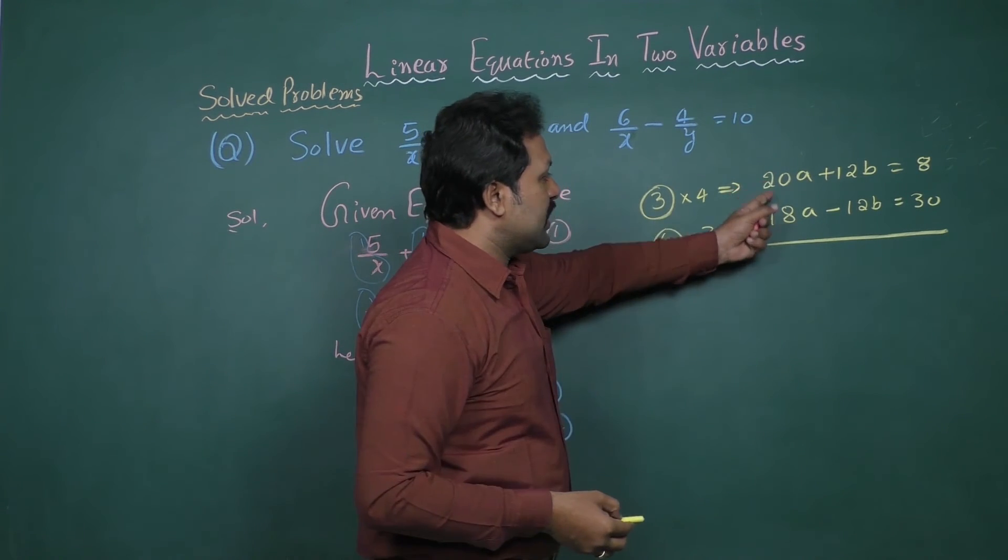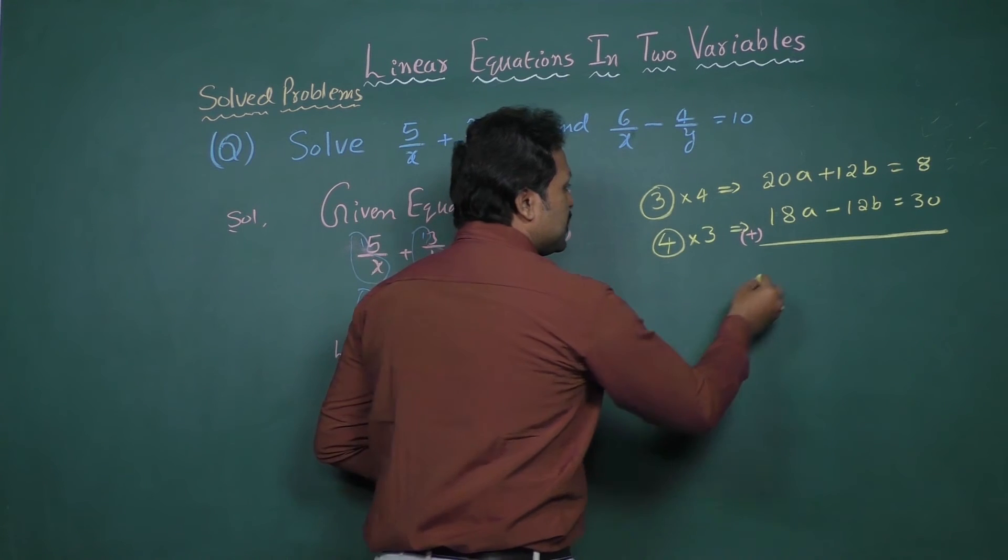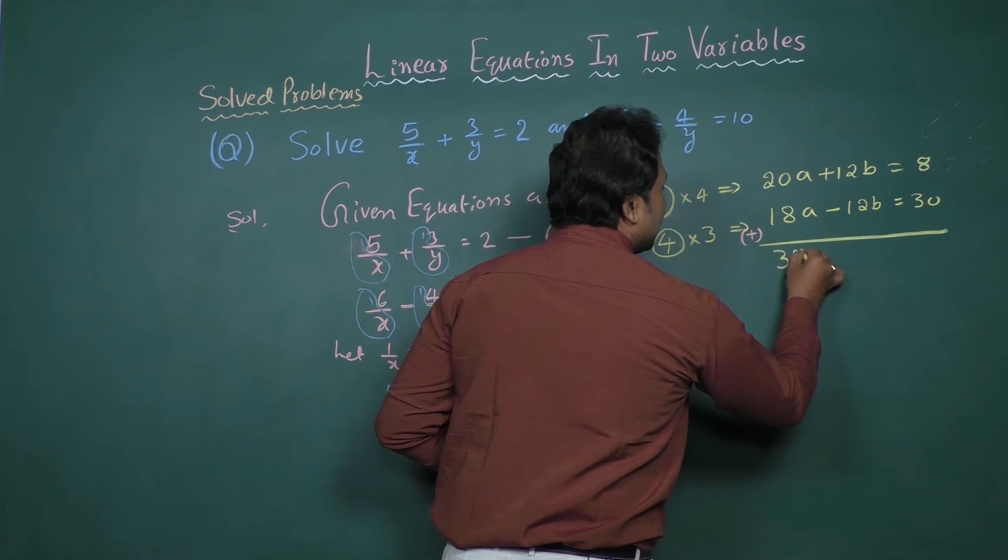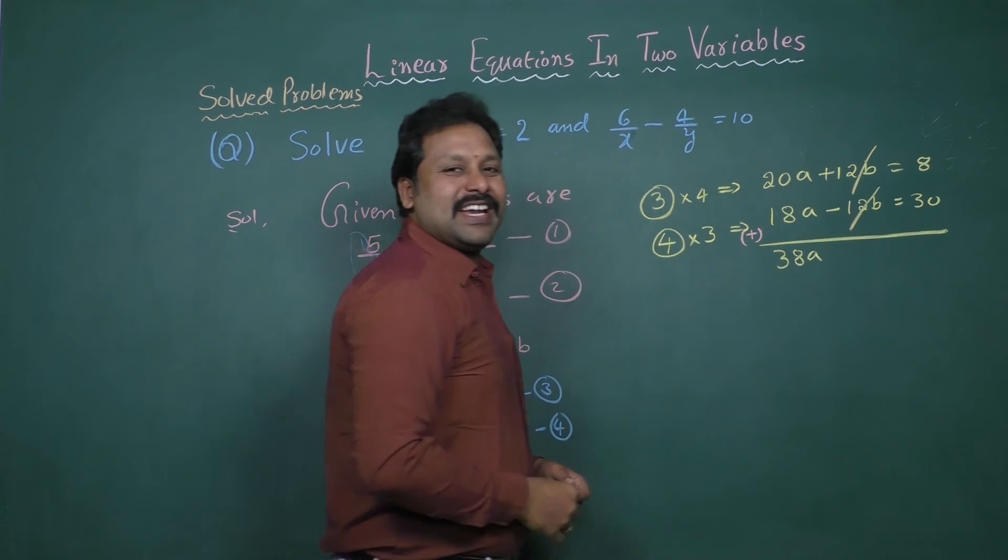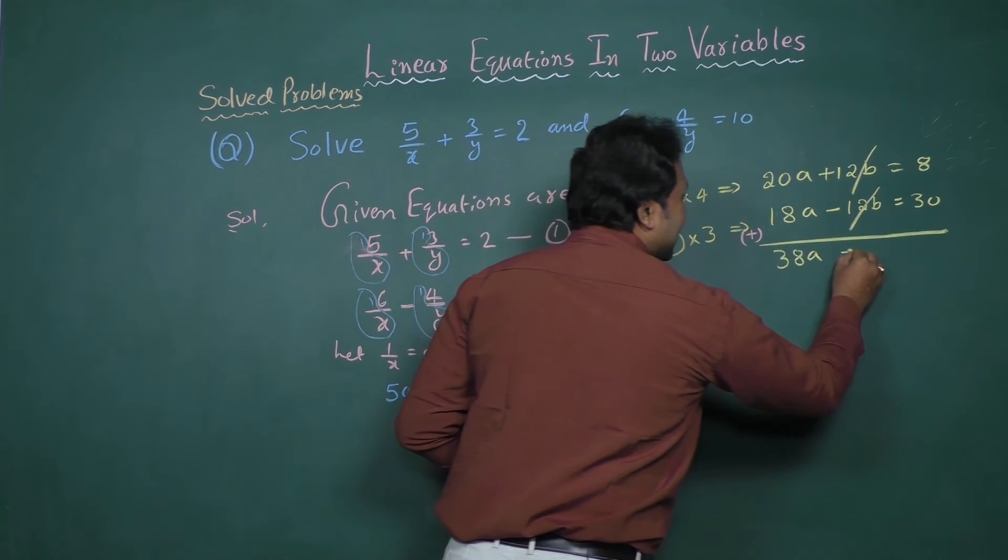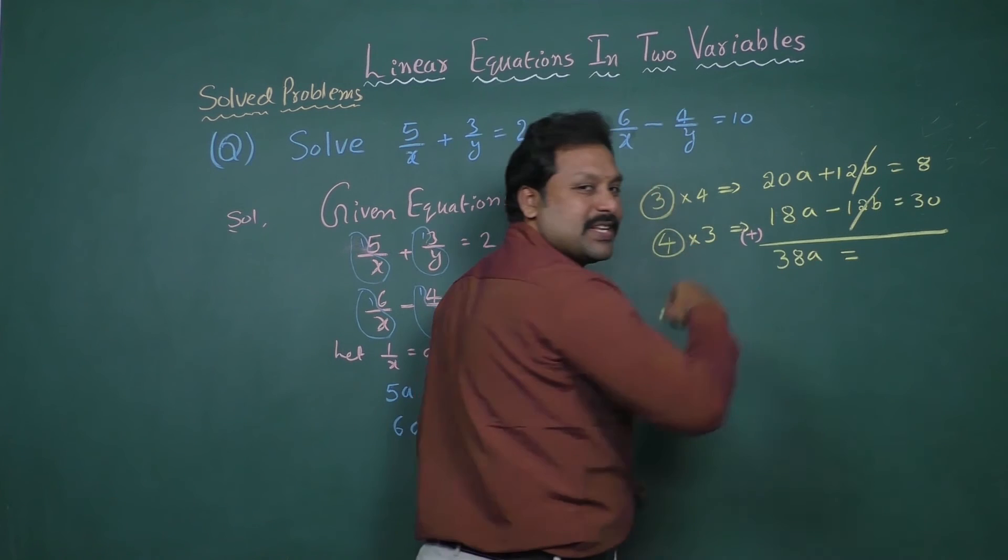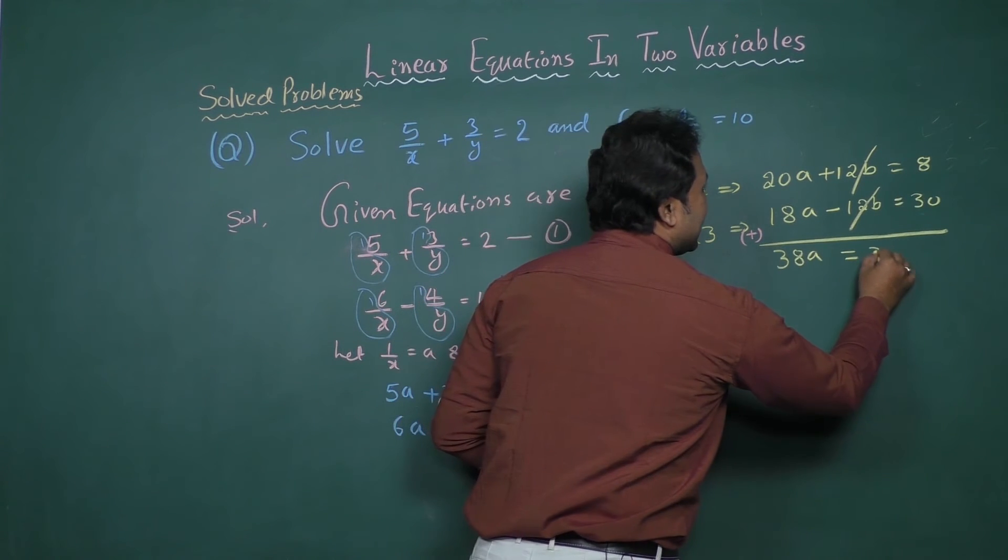Then 20 plus 18 is 38a, plus 12b minus 12b getting cancelled, equal to 8 plus 30 gives 38.